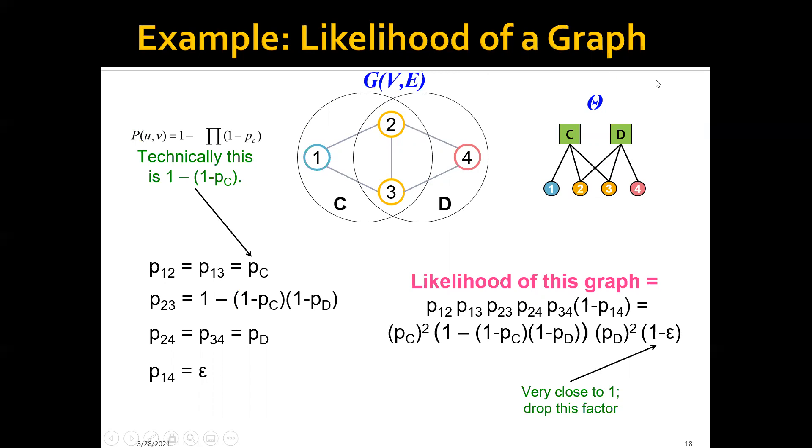Then using these parameters, as well as the corresponding parameter PC and PD, we can then calculate the probability that this edge between node 1 and node 2 is generated. So basically we can calculate it as 1 minus (1 minus PC) because both of them are from community C.